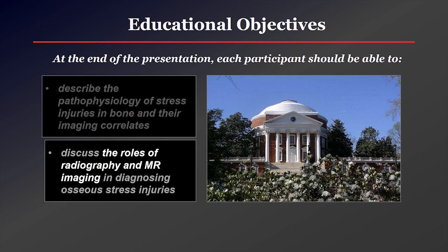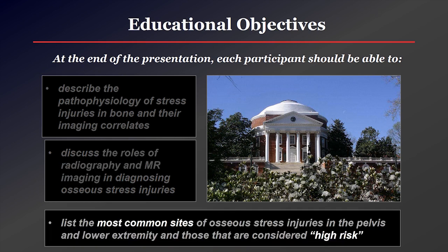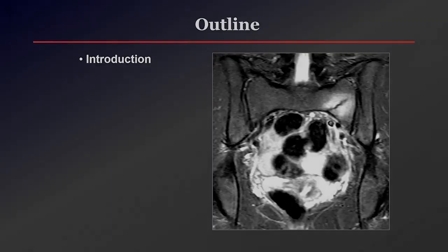You'll be able to discuss the roles of radiography and MR imaging in diagnosing these types of injuries. And finally, you'll be able to list the most common sites of osseous stress injuries in the pelvis and lower extremities, as well as those that are considered to be high risk.